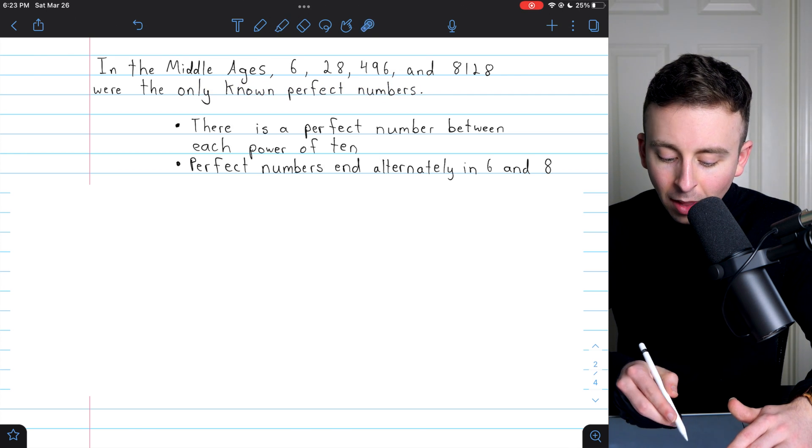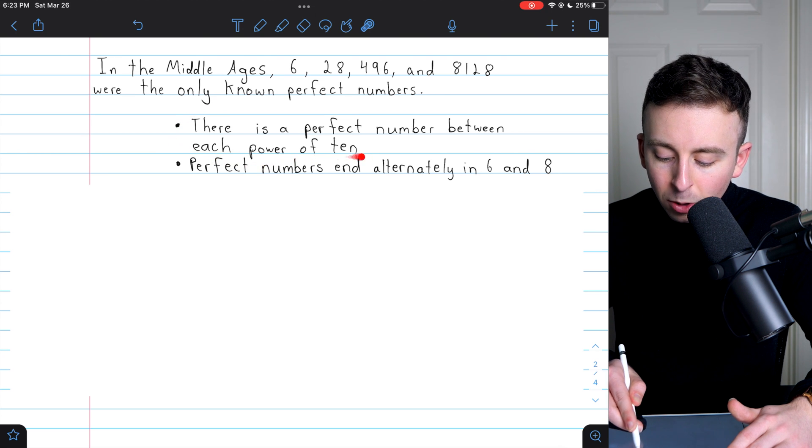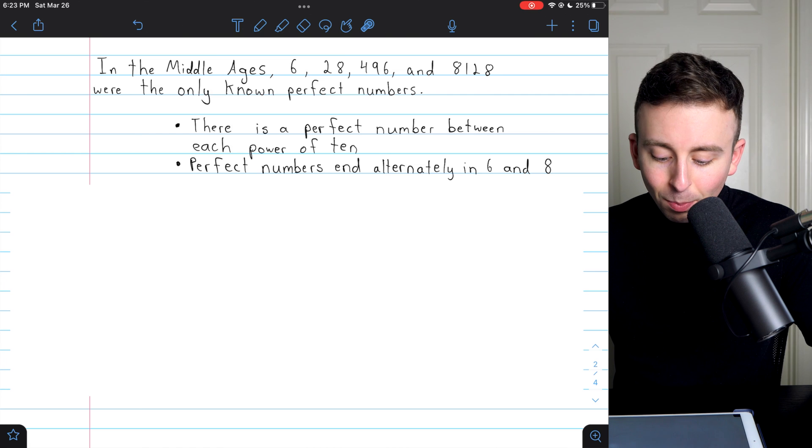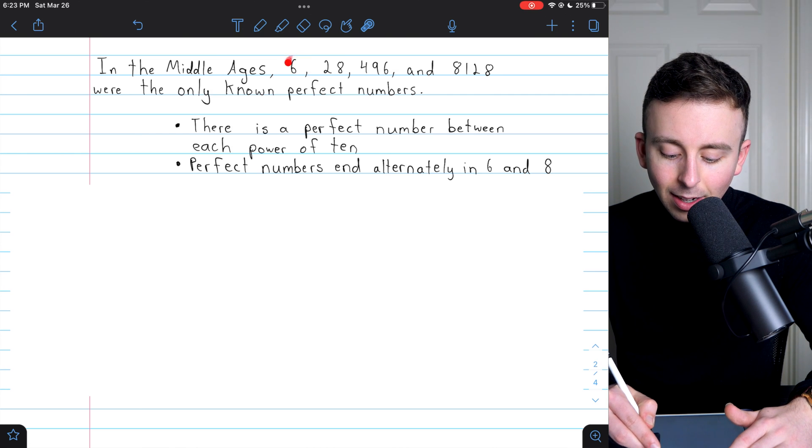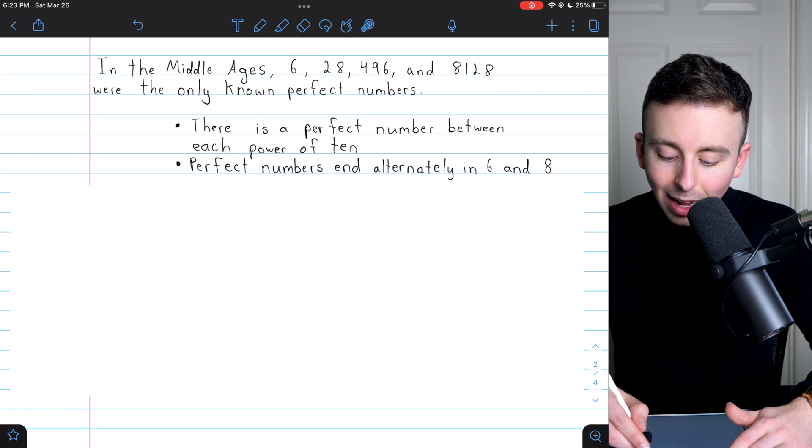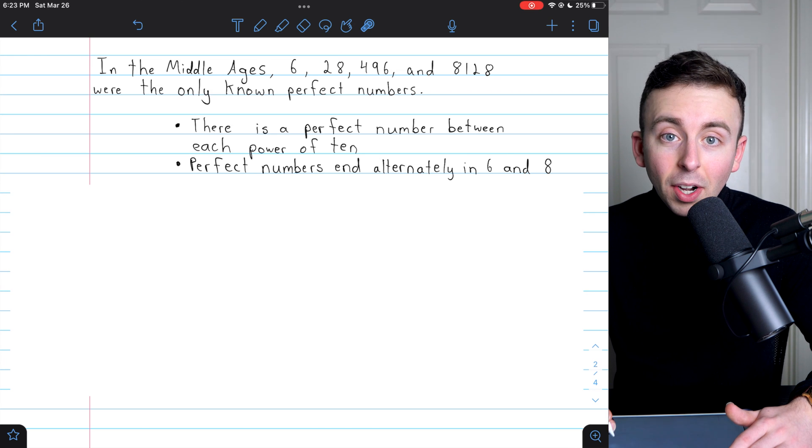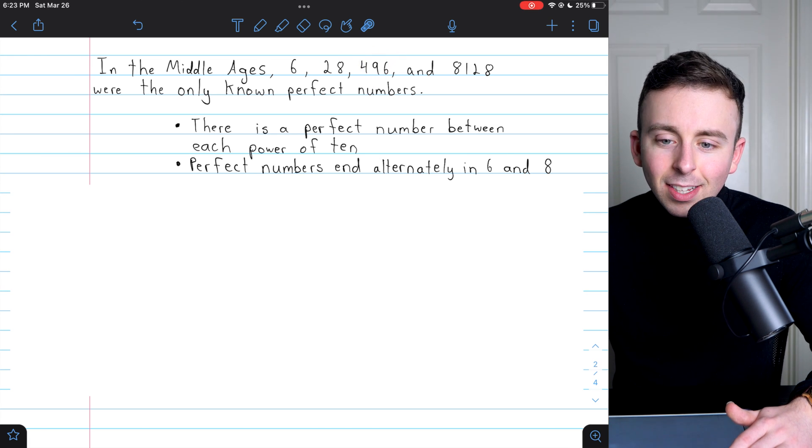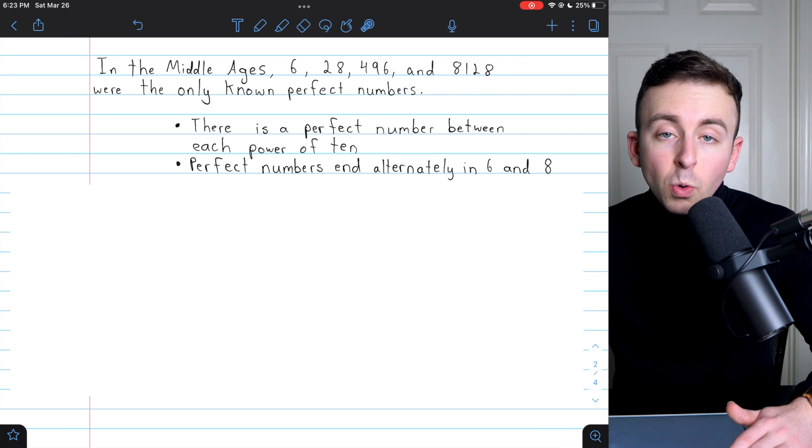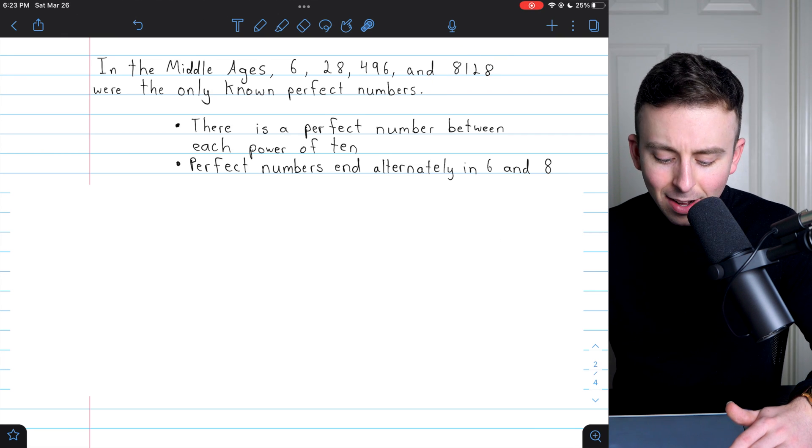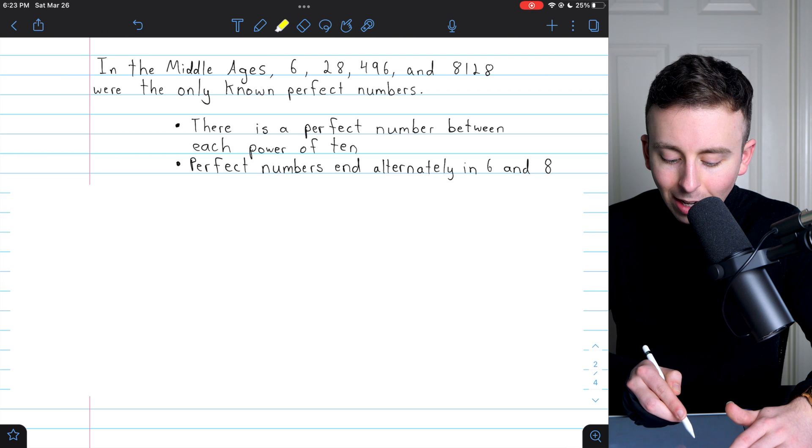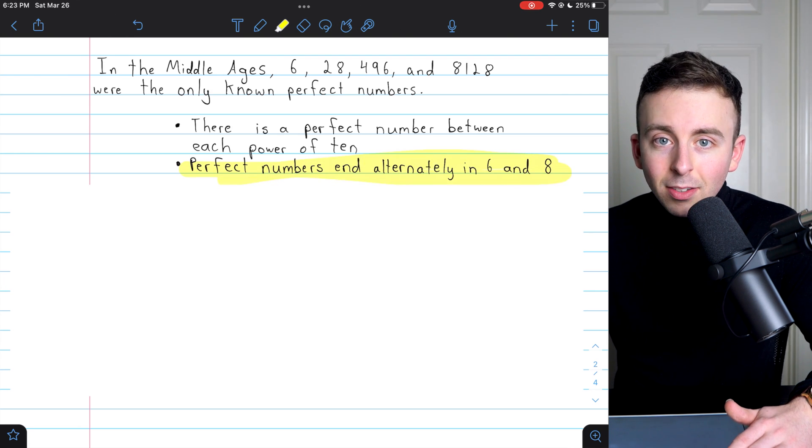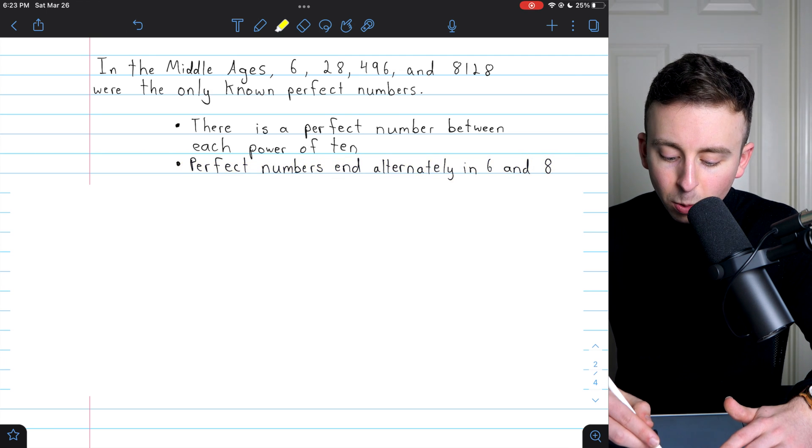And with this very small amount of evidence, a couple conjectures were made. There is a perfect number between each power of 10. There is a conjecture. Seems plausible, right? We've got 6 between 1 and 10. We've got 28 between 10 and 100. We've got 496 between 100 and 1,000. And then 8,128 between 1,000 and 10,000.